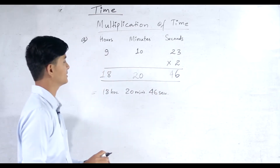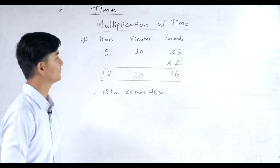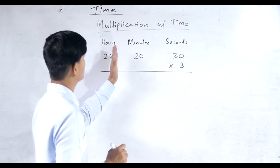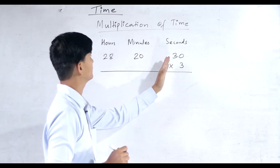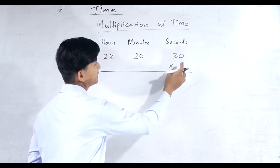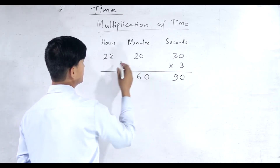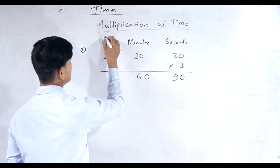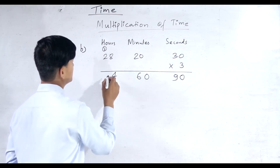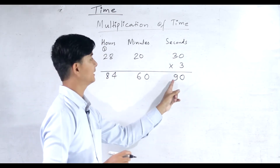This is our answer: 18 hours, 20 minutes, 46 seconds. In this way you have to multiply any problem. Now another question: 28 hours, 20 minutes, 30 seconds multiplied by 3. So: 3 × 30 = 90; 3 × 20 = 60; 3 × 28 = 84. We have a carry of 2, so we get 84 hours, 60 minutes, and 90 seconds.